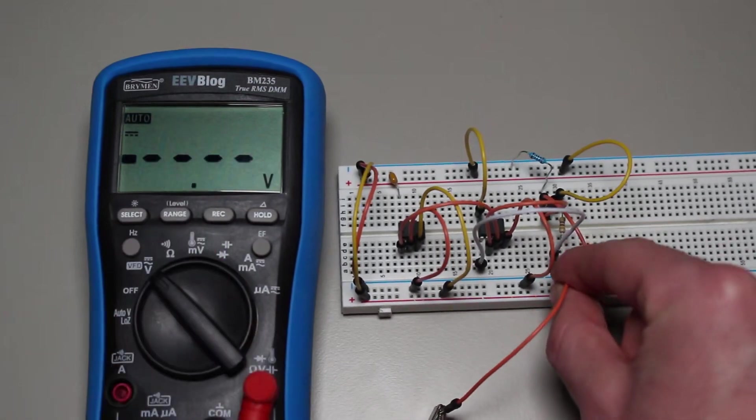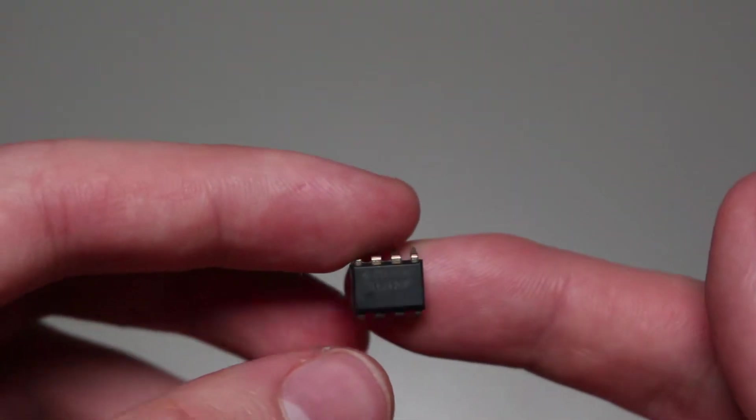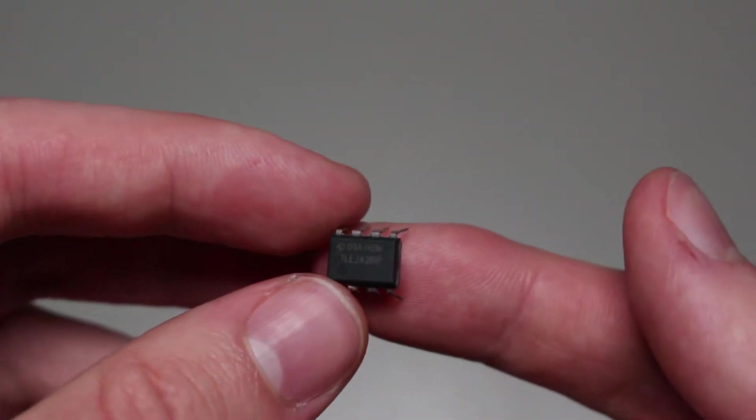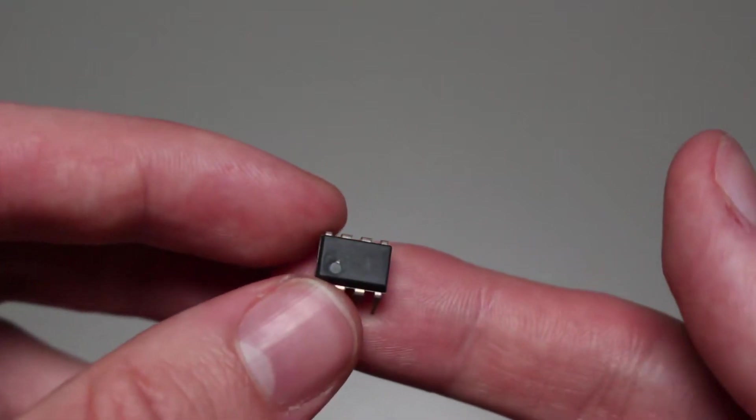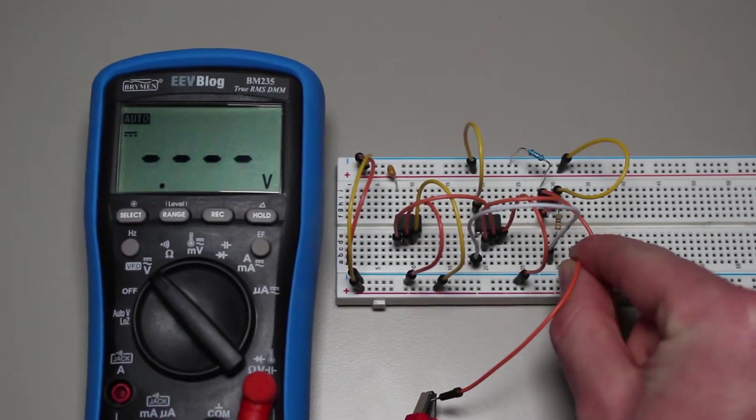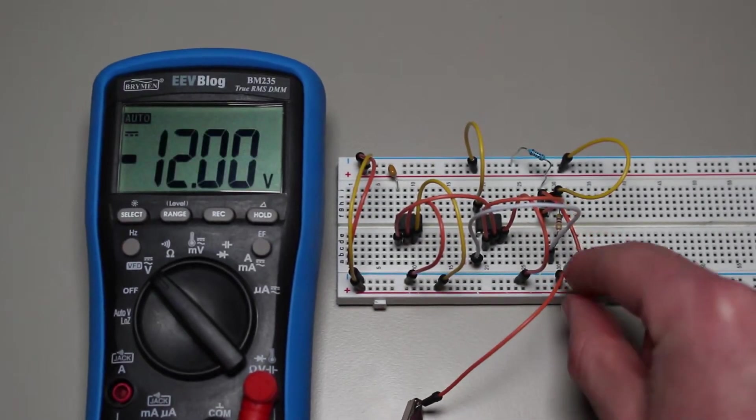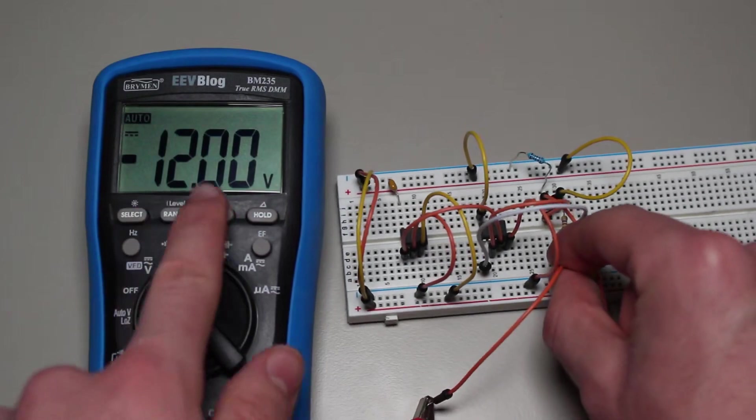One improvement that can be made is replacing the resistor divider with a TLE2426, which I will be doing. Don't worry if you don't have one. This IC is basically a precision voltage divider that makes it extremely easy to get exactly half of the input voltage.